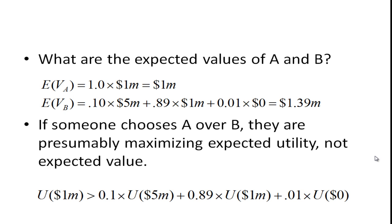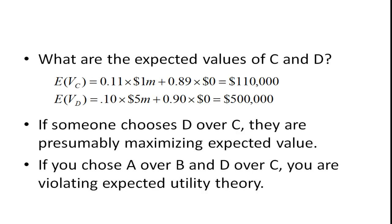Let's take a look at how C and D look — what are the expected values? The expected value of C is 11% times 1 million, plus 89% times zero, so it's 110,000. For D, it's 10% of 5 million plus 90% of zero, or 500,000.